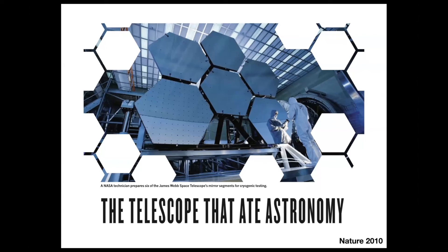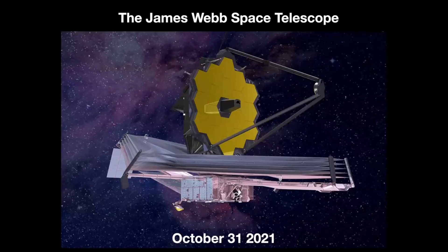Webb has been in the news for all the wrong reasons over the last decade. Nature ran a piece in 2010 titled 'The telescope that ate astronomy.' Webb was originally supposed to launch in 2011 and it's now 2021 — roughly a few billion dollars over budget and 10 years late. If you think back to the timeline for Hubble, it's actually basically on track with what Hubble had done, although for very different reasons. However, in the last two years they've made tremendous progress and the launch date is now fixed — October 31st, 2021. So when you're out for Halloween this year, you can think about James Webb unfolding itself in space.